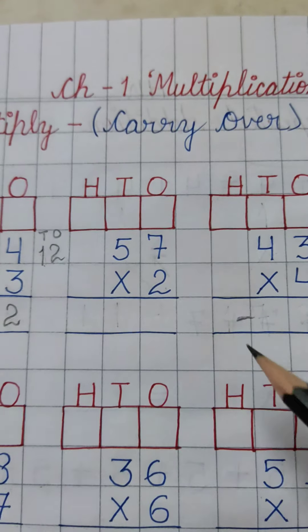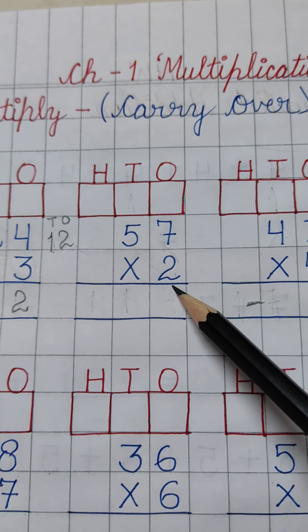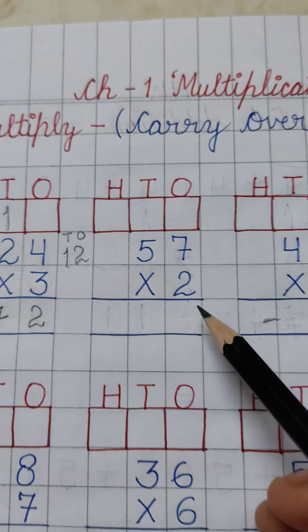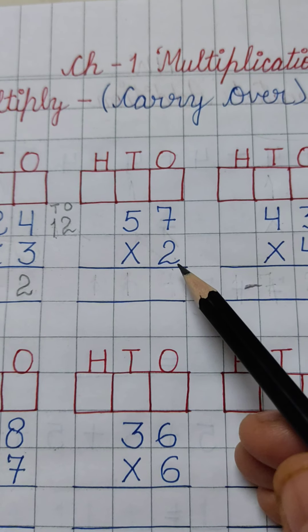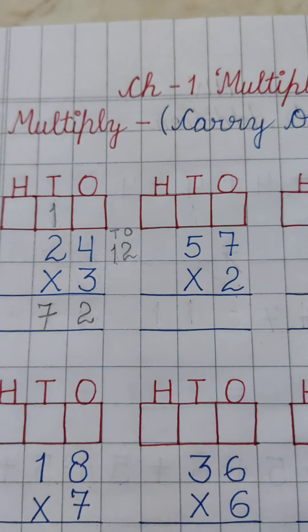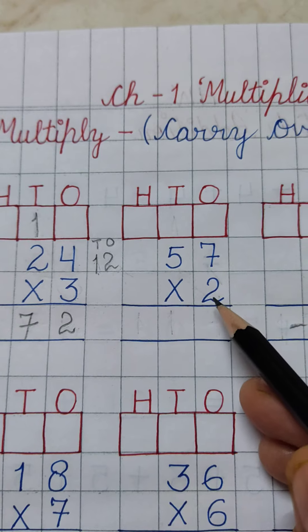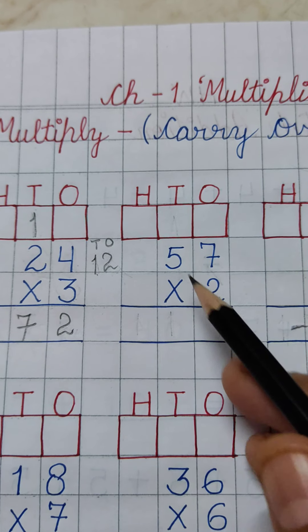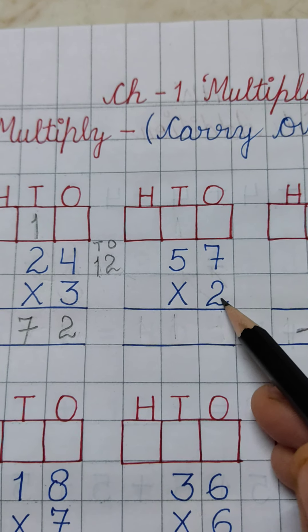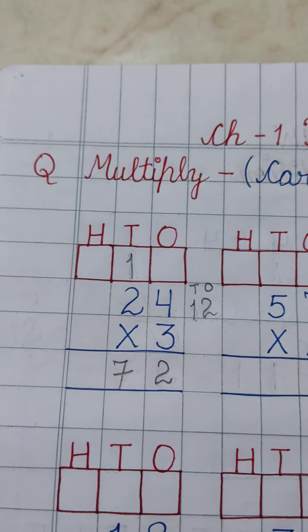Now the next one: 57 multiply by 2. We have to multiply 2 by 7 and 2 by 5. Then 2 7's are 14.